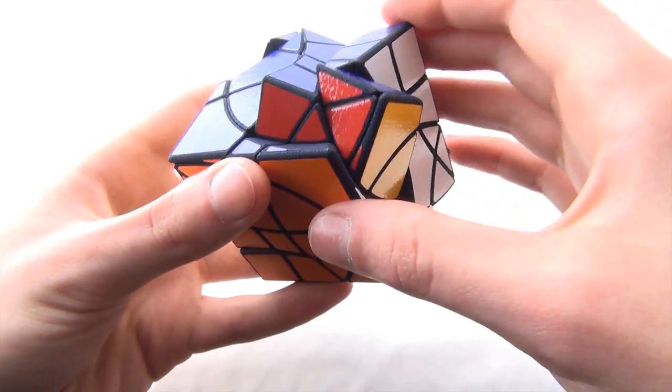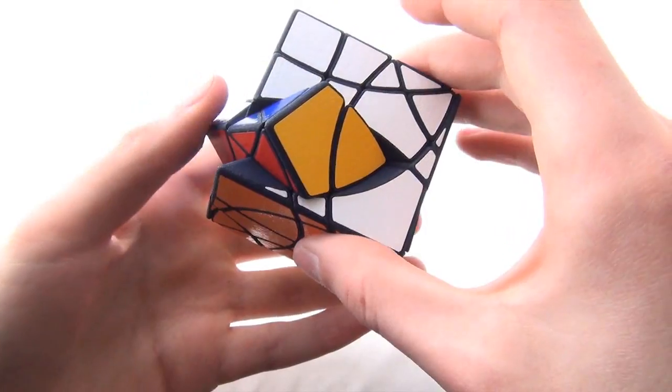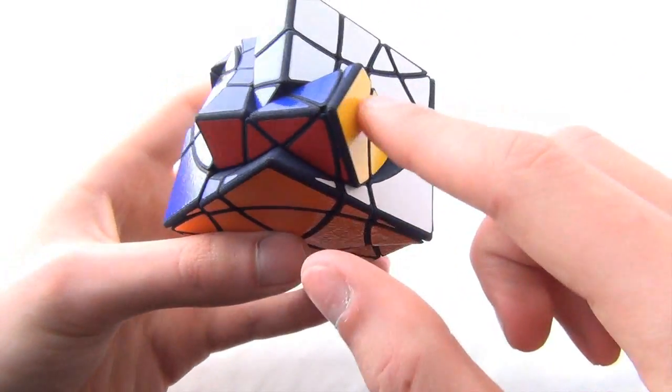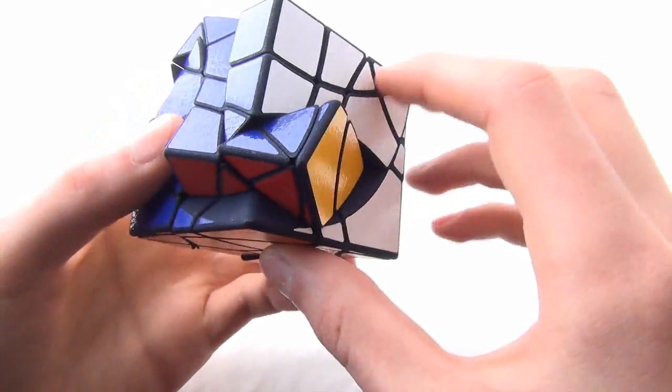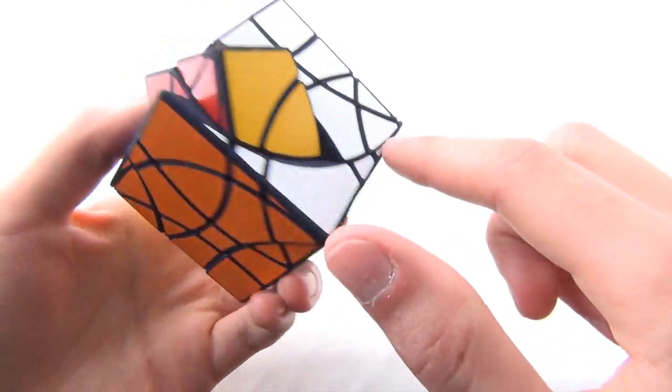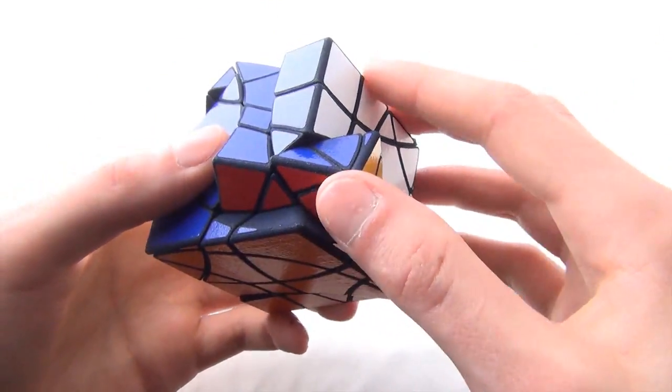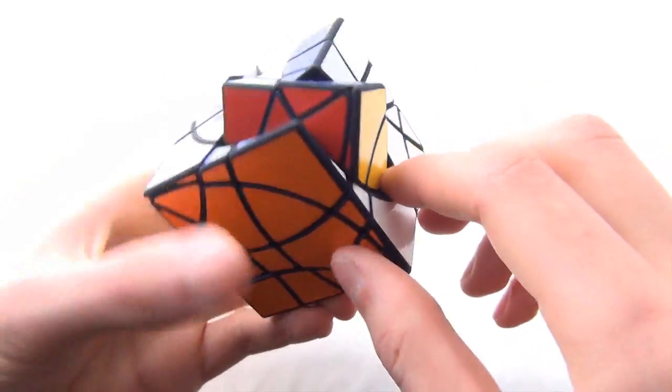Now, when I turn the layers back, you can see that this piece is completely out of its orbit. So, before, like I mentioned, this middle layer of pieces would never change shape, because it's all in a single orbit.